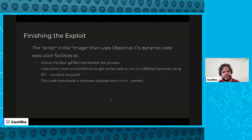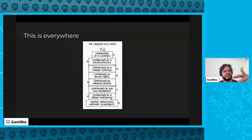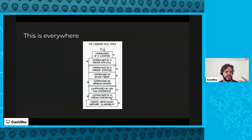The decoder used Objective-C dynamic code execution facilities to delete the fake GIF file, then used further vulnerabilities accessible only to elevated-privilege code to run code in a different process with even more privileges via inter-process communication — fully escaping the app sandbox. Then it downloaded a malware payload and made the OS run it. You're fully compromised, and you didn't do anything — you just received a message containing a fake GIF.